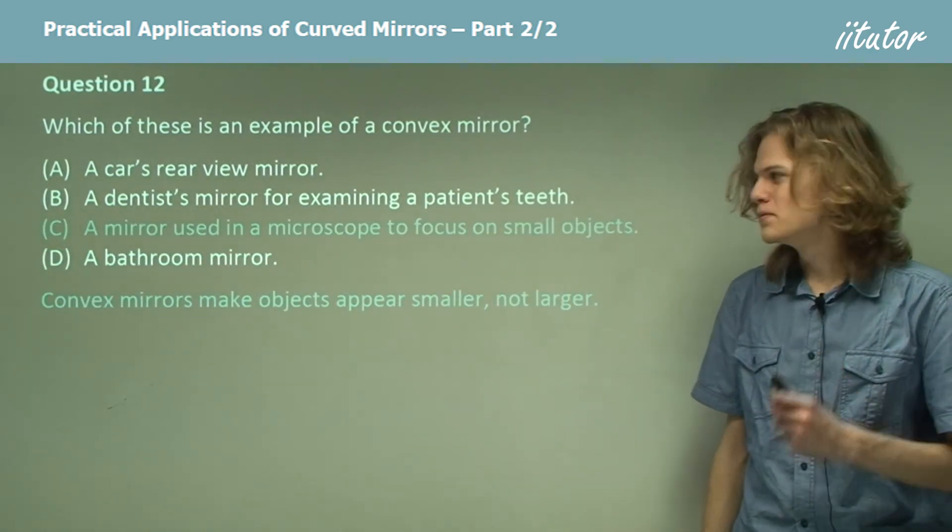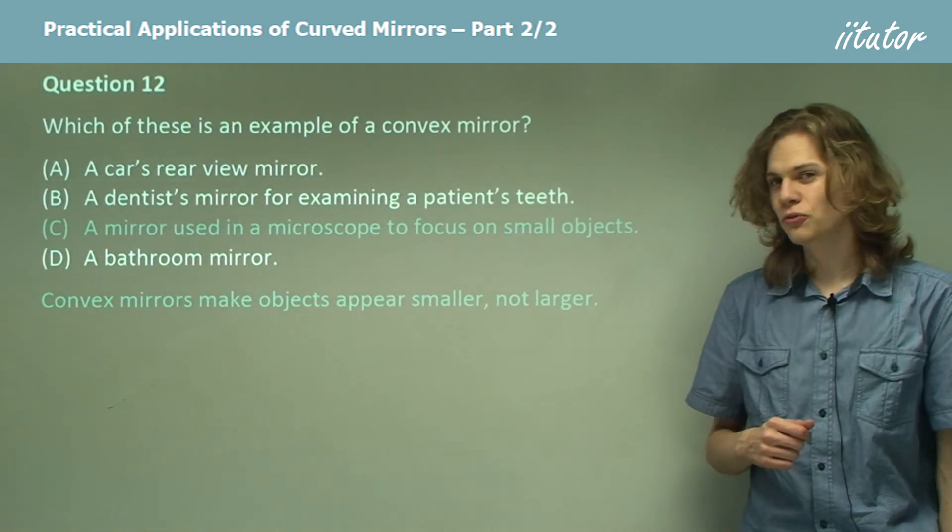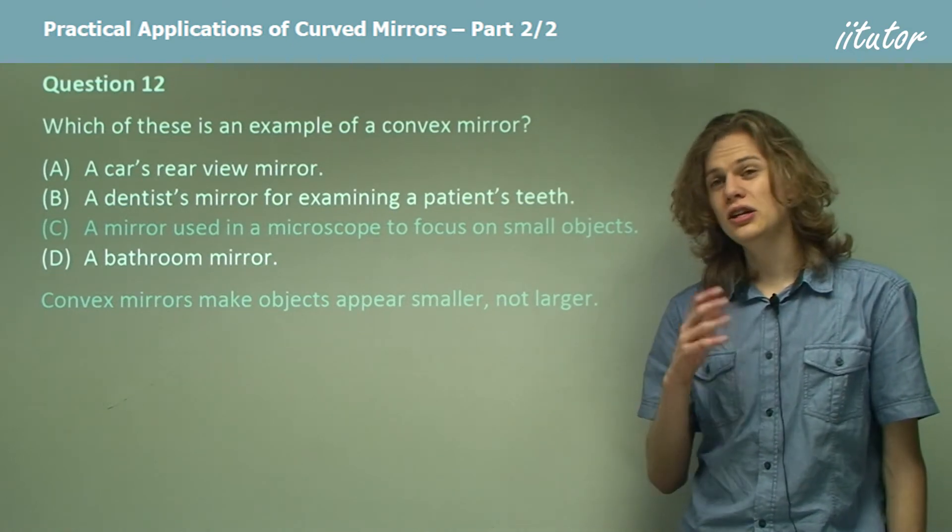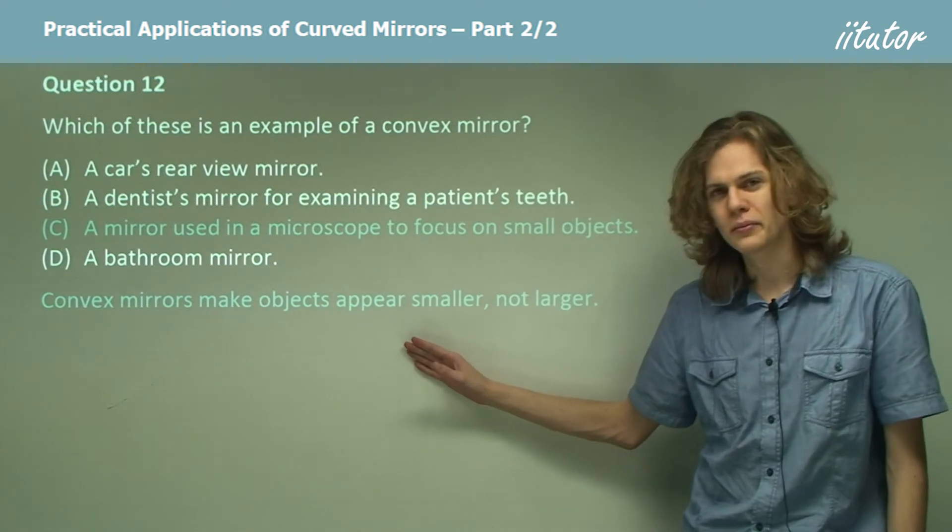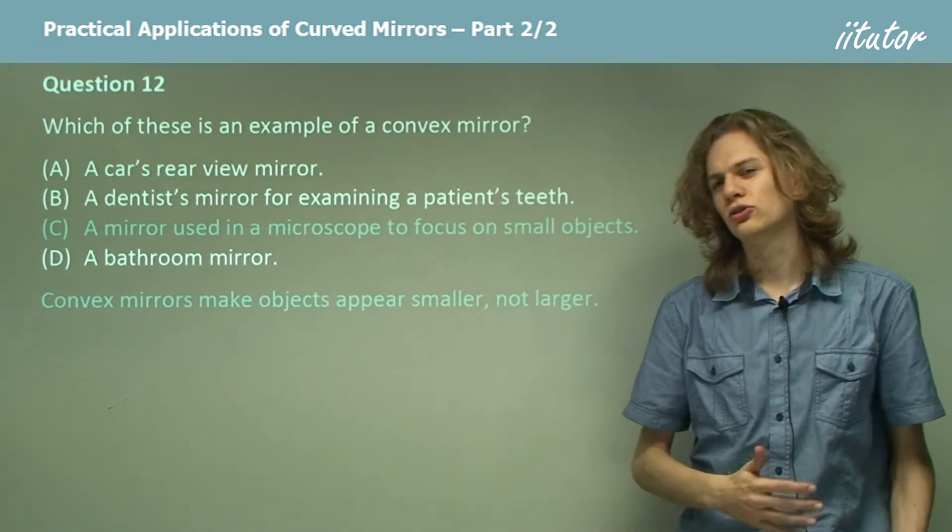How about C, a mirror used in a microscope to focus on small objects? Well, first of all, microscopes tend to use lenses rather than mirrors. But even if they did use a mirror for magnification, they would need a concave mirror if they wanted to make an object look bigger. A convex mirror will only make objects look smaller.